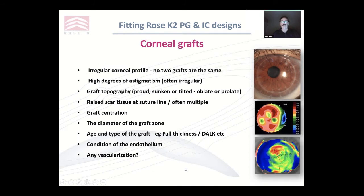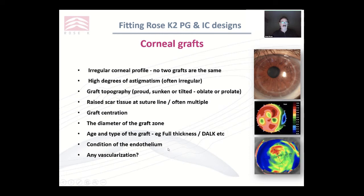Corneal grafts are probably the most difficult of all fits. They often have an irregular corneal profile — no two grafts are the same — with high degrees of irregular astigmatism. They can be proud, tilted, sunken, oblate, or prolate. Often the highest part of the graft is along the suture line, making it quite difficult to get a lens to centre. Always consider the age and type of graft. There is a school of thought that fitting semi-scleral lenses on old grafts with very low endothelial counts is not ideal. Make sure you have a good look at the endothelium.